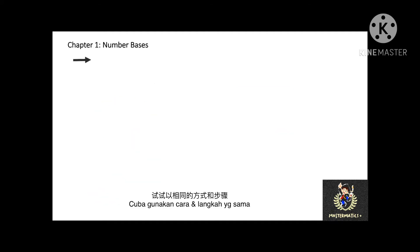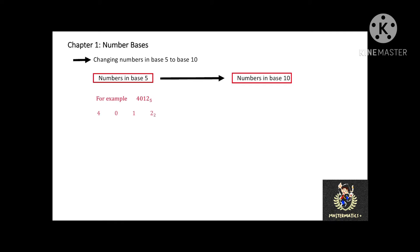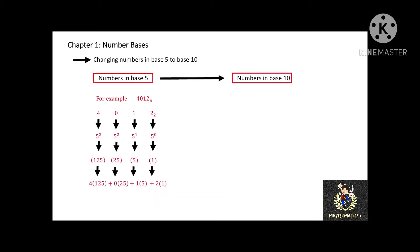Changing a number in base 5 to base 10. We can use the same method as the previous example. Can you change 4012 base 5 into base 10? Since this is changing from base 5, the index notation starts with 5 to the power of 0, adding 1 to the index subsequently and ending with 5 to the power of 3.